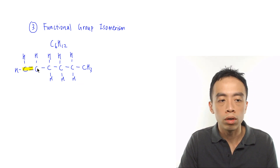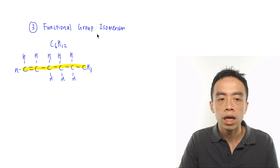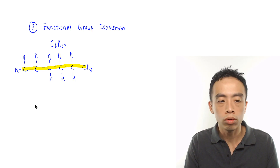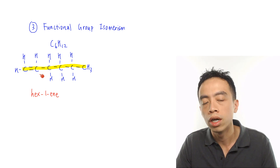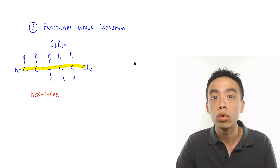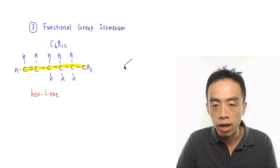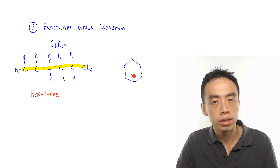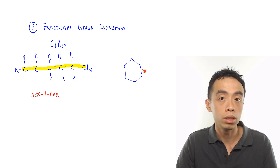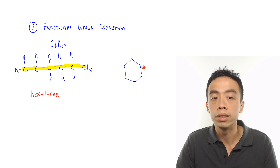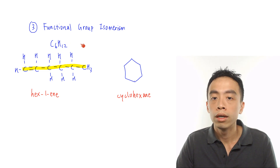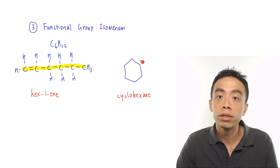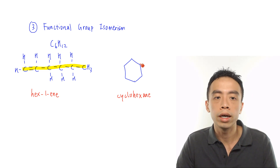The longest carbon chain is 6 carbons and the double bond is between carbons 1 and 2, so this compound is hex-1-ene. Another way to draw C6H12 is cyclohexane, a cycloalkane, where each corner of the hexagonal ring represents a CH2 group — giving C6H12. Both compounds have the same molecular formula C6H12, but one is an alkene and the other is a cycloalkane. Because they have different functional groups, these two compounds are considered functional group isomers.